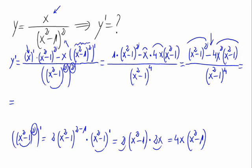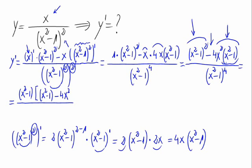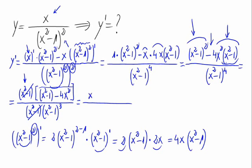On the numerator, we have x squared minus 1 on each element, so we can easily obtain the common factor x squared minus 1. Factoring it out gives us x squared minus 1 times (x squared minus 1 minus 4x squared), divided by x squared minus 1 times x squared minus 1 cubed. That way, we can simplify and cancel the x squared minus 1 appearing in both the numerator and denominator.